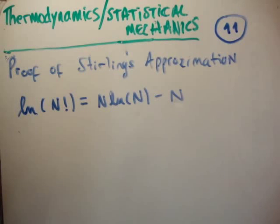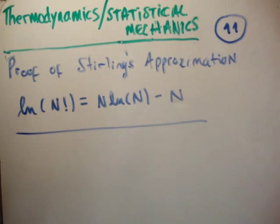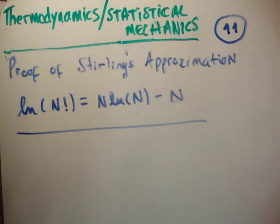In this video, I'm going to continue on with my tutorial series on thermodynamics and statistical mechanics. I'm on video number 11, and this one is independent; however, it's very important for some later proofs. This is the proof of Stirling's theorem, or Stirling's approximation, which says the natural logarithm of n factorial is equal to n multiplied by the natural log of n, minus n.